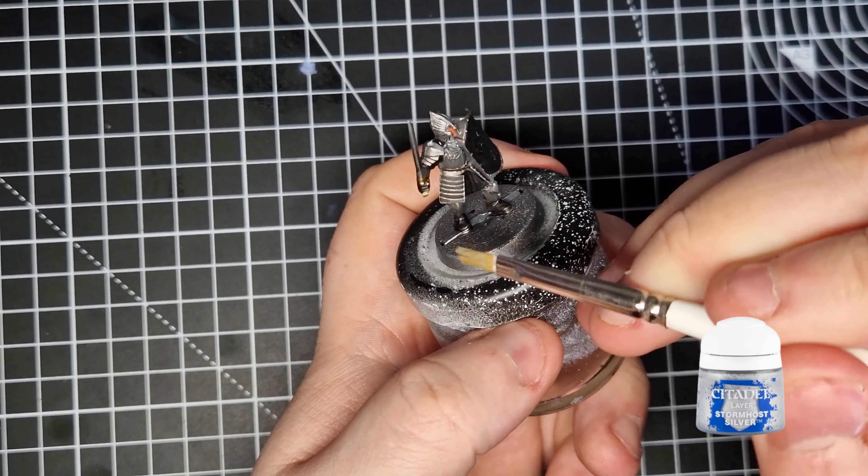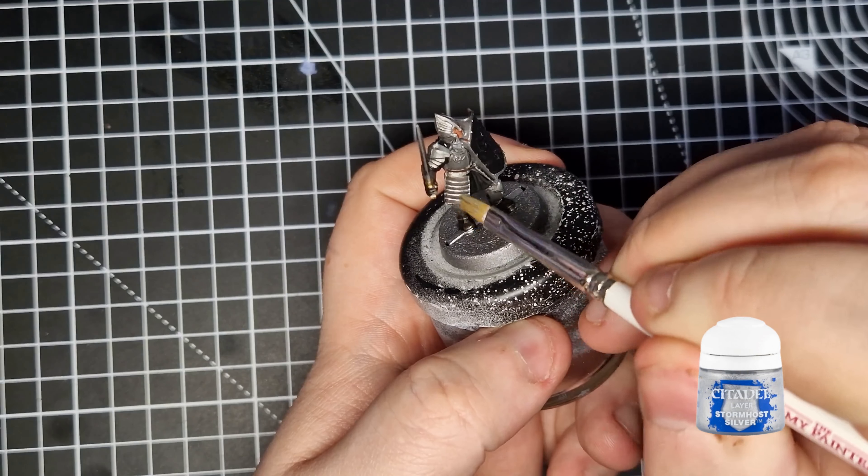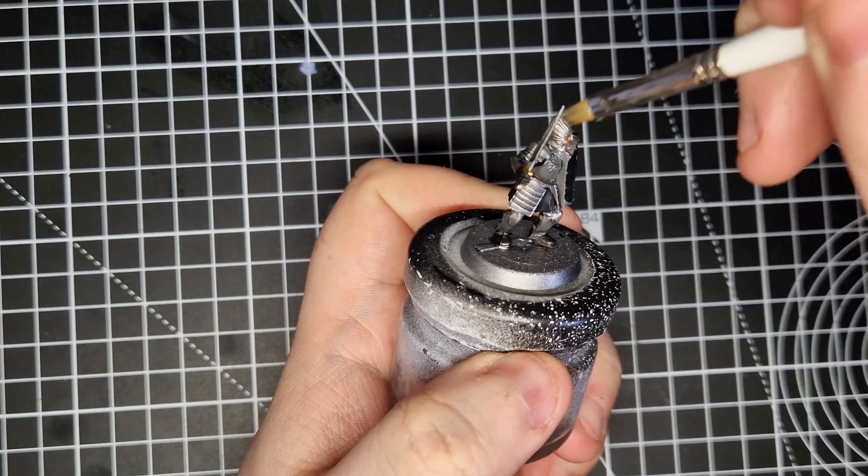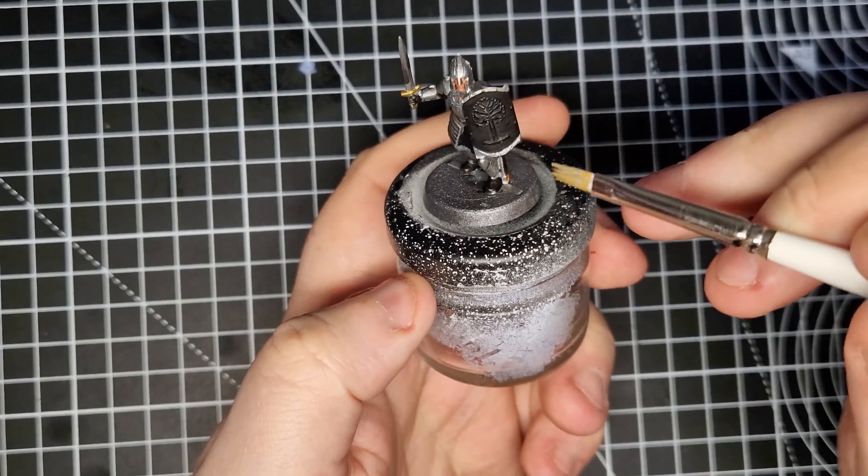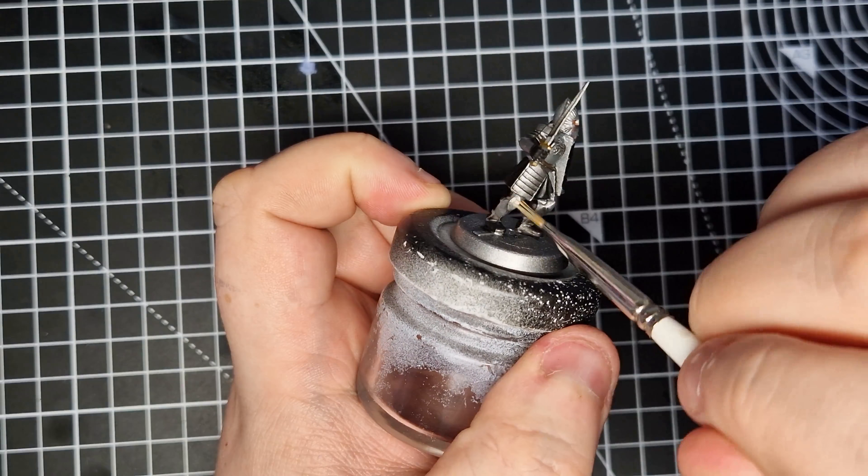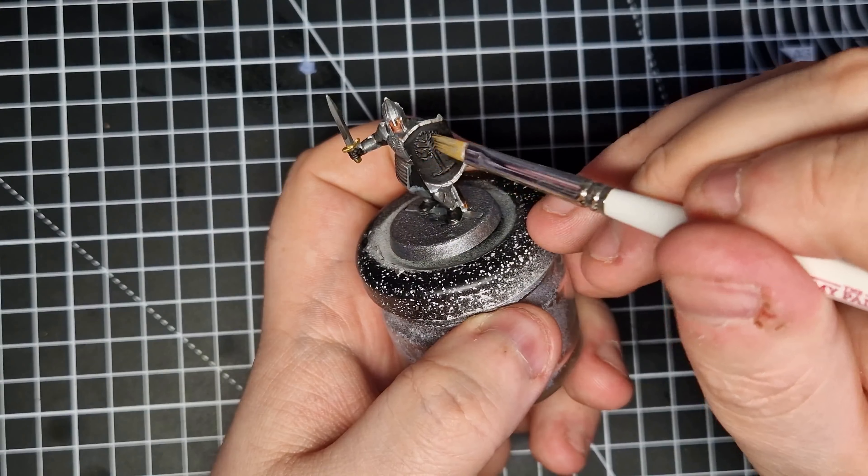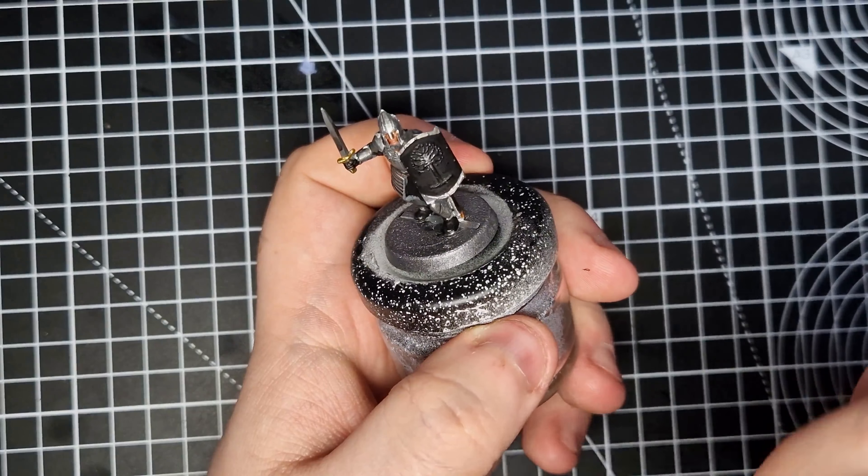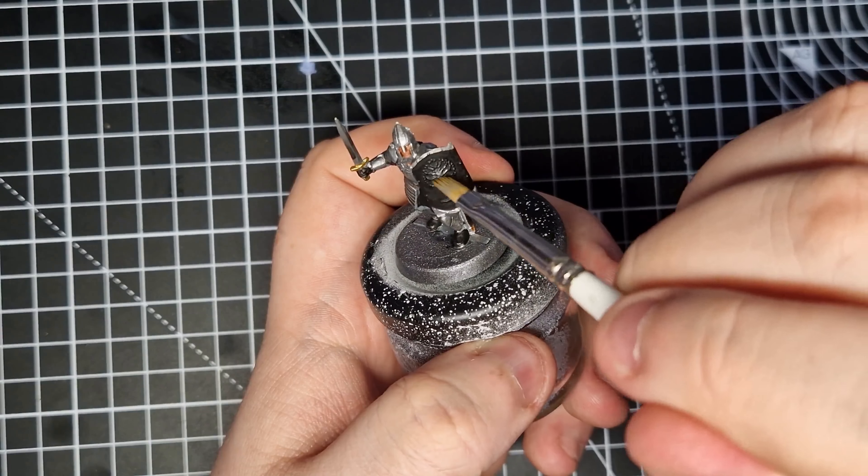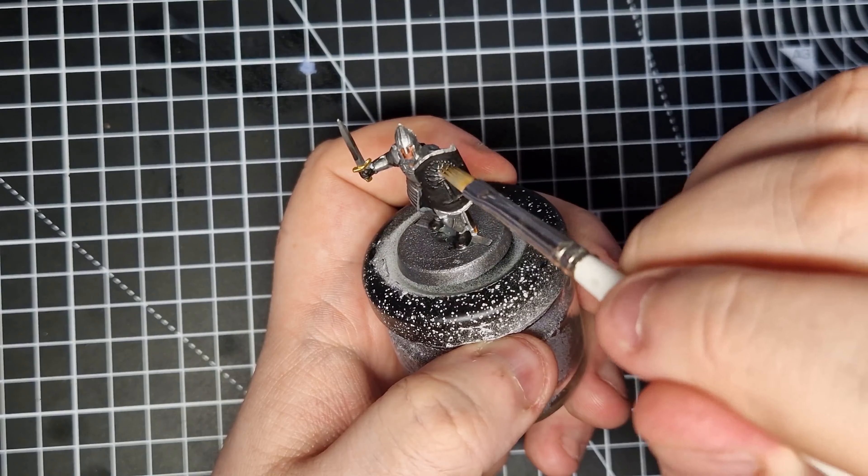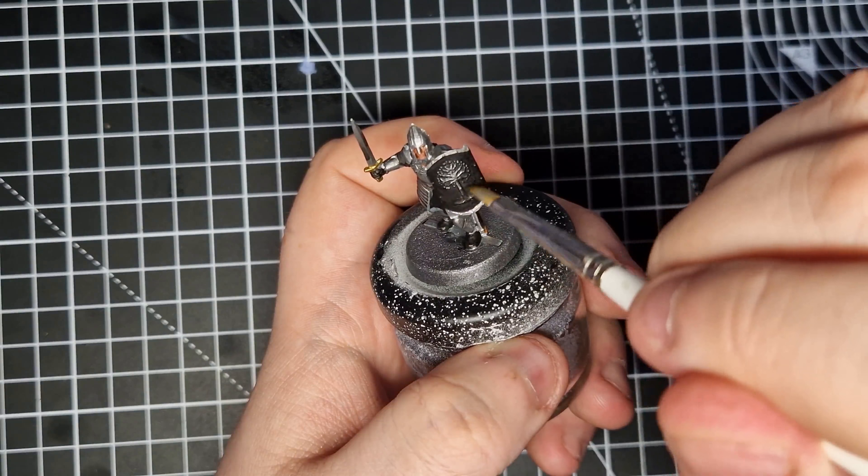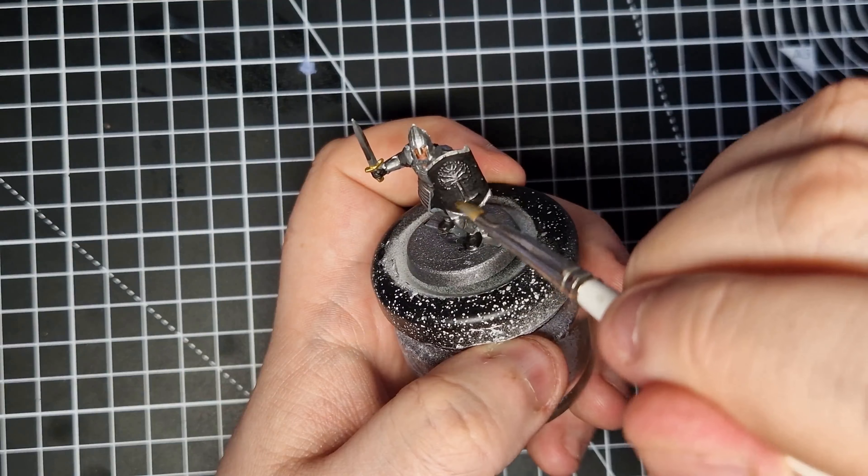Now that the model is completely dried, we're going to start highlighting it and adding some finishing touches. Firstly, we're going to dry brush some Stormhost Silver onto any of the iron armour and sword just to give it a little bit of a shine and go over that dullness caused by the Nuln Oil. And now we're going to use that same dry brush technique and that same Stormhost Silver to bring back out the details of the shield that we covered up in black earlier. Make sure there's not too much paint on your brush and then gently go back and forth across the shield, highlighting all of those raised edges of the tree.